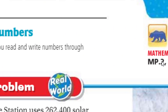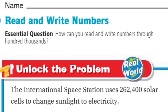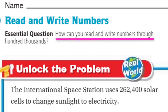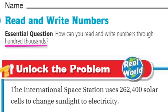We have the topic of: read and write numbers. If you recall, in our previous lesson we were looking at the place value relationships. Now we're going to read and write the numbers. What is our essential question — our learning target, our objective? It is: how can you read and write numbers through hundred thousands? Hundred thousands — that's so big!